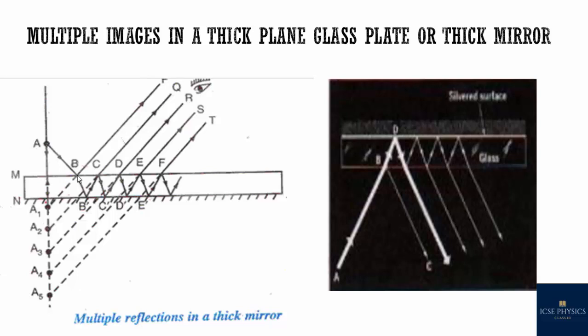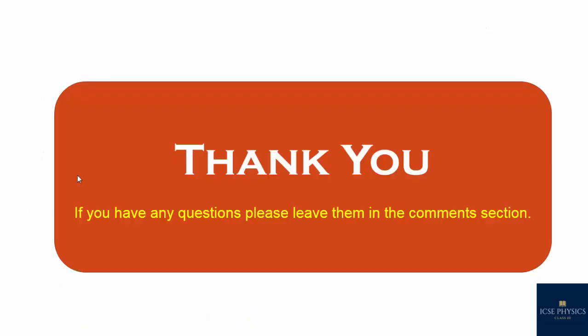The second image is the brightest of all, as minimum absorption takes place and it reflects off the silvered surface. All successive images are formed due to multiple reflection and absorption, and hence they are not as clear. Thank you for watching this video. If you have any questions, please leave them in the comment section below. If you like the video, please subscribe and give a thumbs up.